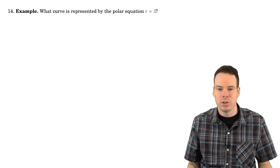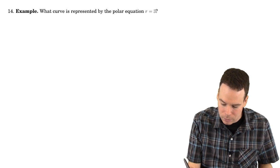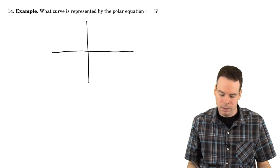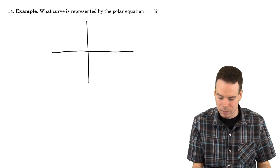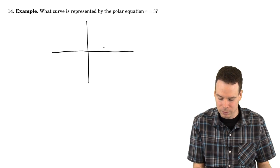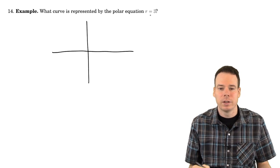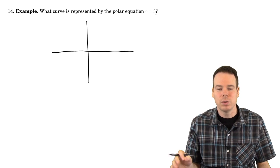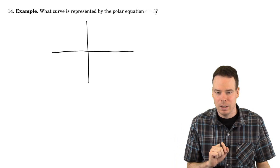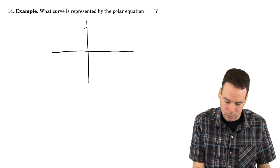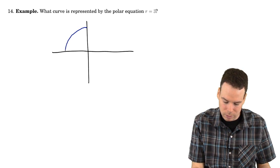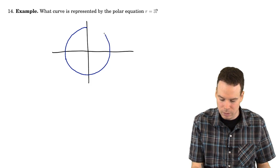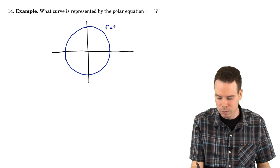So what curve is represented by the polar equation r equals 3? We've got our polar coordinate plane here, and I'm using the Cartesian coordinate grid, our axes, as a frame of reference for my polar coordinate system. What is r equals 3? Well, those are all the points whose r value is 3. All the points whose distance is 3 from the pole. So there's a whole circle of points whose distance is 3 from the pole. That's r equals 3.